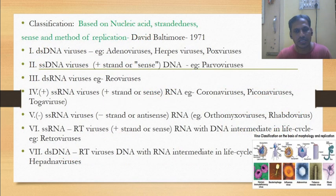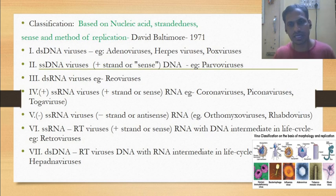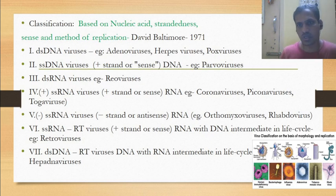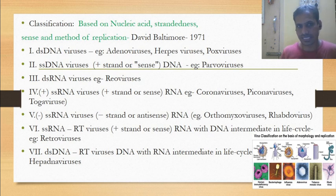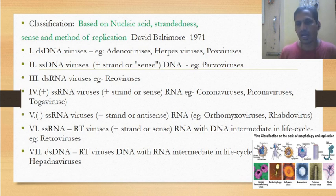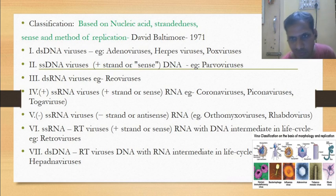Viral classification is based on the nucleic acid — either DNA or RNA — whether it is double-strand or single-strand, its sense or antisense orientation, and method of replication — either lytic or lysogenic. This classification system was discovered by David Baltimore in the year 1971.